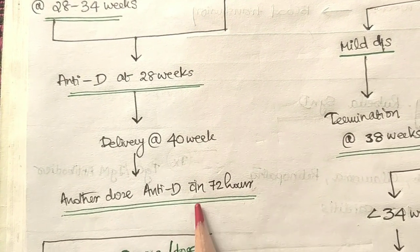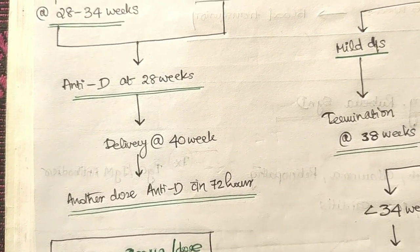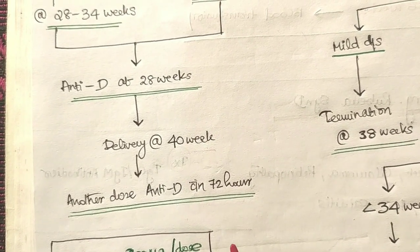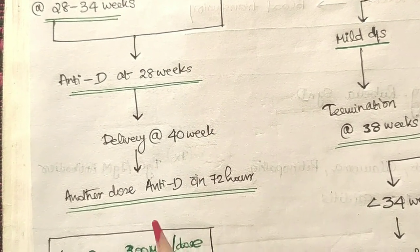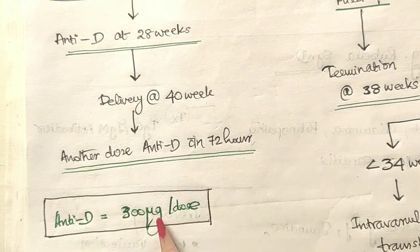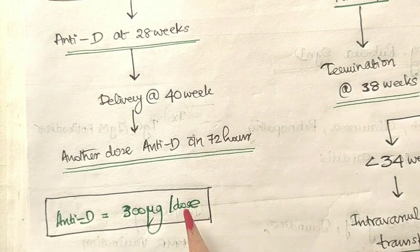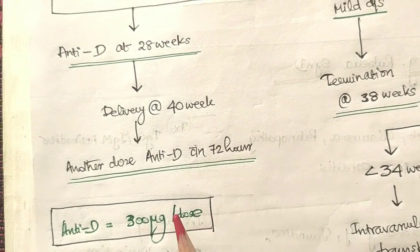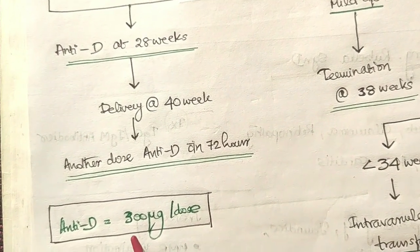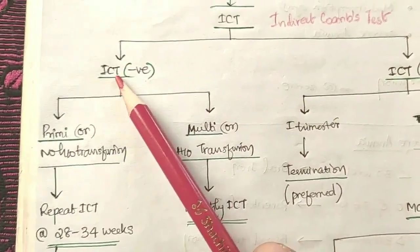After delivery, a second dose of anti-D must be given within 72 hours, as there may have been mixing of blood during delivery. The standard dosage of anti-D is 300 micrograms per dose, though there is another method to calculate the dose which will be discussed separately.